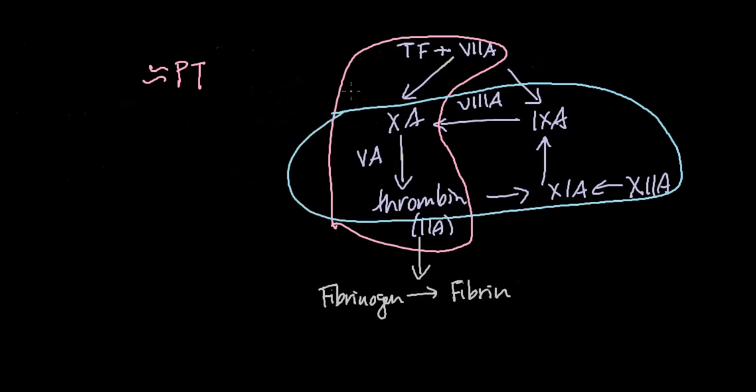PTT, measuring the intrinsic pathway, is usually shortened by up to 4 seconds in the third trimester.